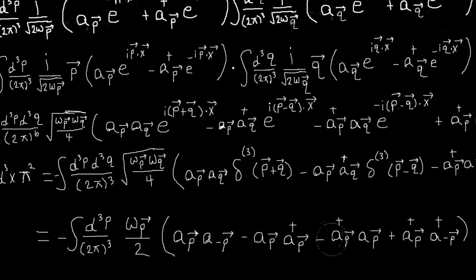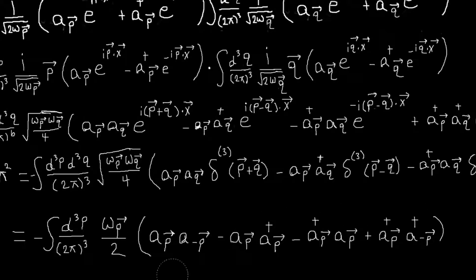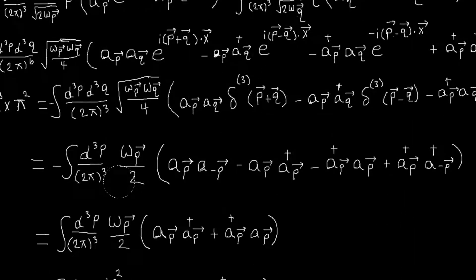And what we can do with this is we can get rid of these terms that have an a_p and an a minus p, or an a_p dagger and a minus p dagger. And just leave this with these terms. So this minus will cancel with these two minuses, which is just left with this.